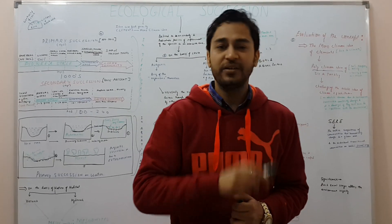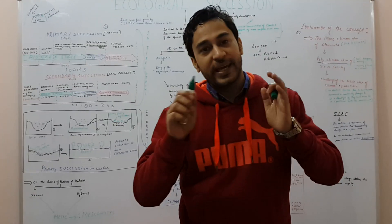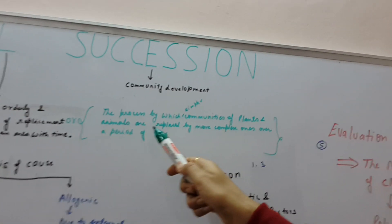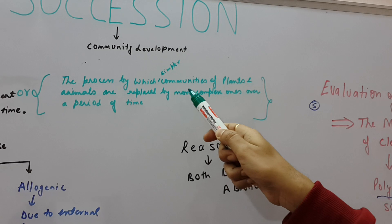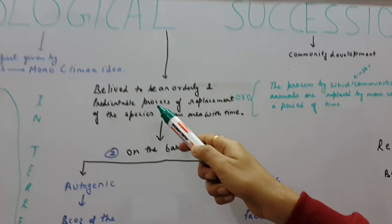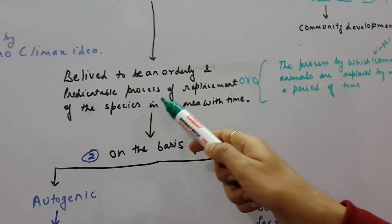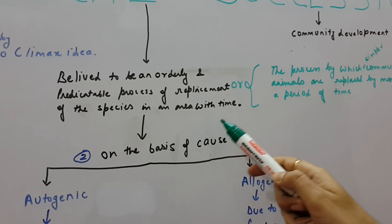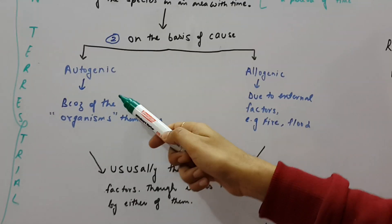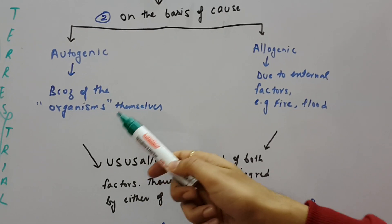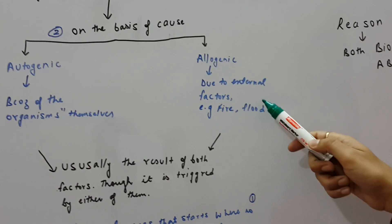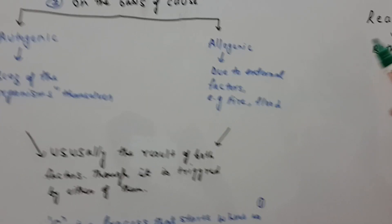Now let's come to secondary succession. Secondary succession is a process where life existed earlier but due to some reason it was wiped out. Ecological succession is a process by which simpler communities of plants and animals are replaced by more complex ones over a period of time. It is an orderly and predictable process of replacement of species in an area with time. On the basis of causes, it can be either autogenic succession or allogenic succession.